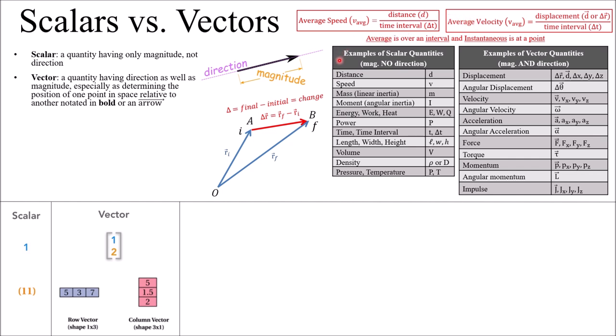Quick example: if you travel five meters to the right and then five meters to the left, your distance would be 10 meters, but your displacement would be zero because you're back at the same point where you started. Even though it's a subtle difference, it's actually very important.